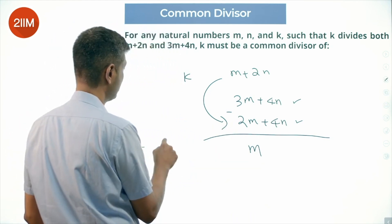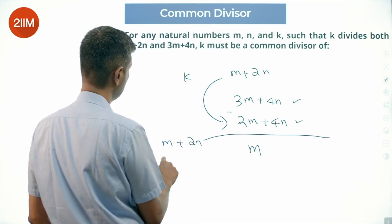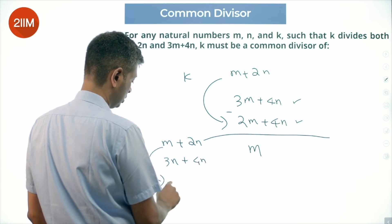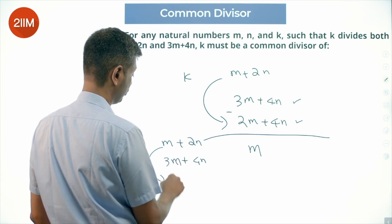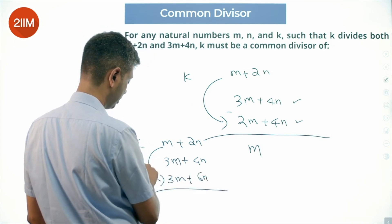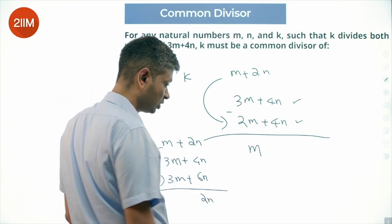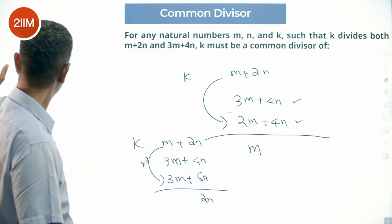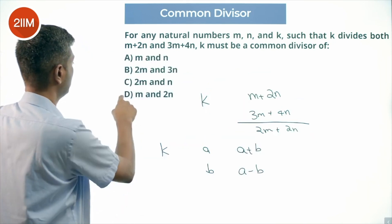What do we do next? K divides M plus 2N and 3M plus 4N. So K will divide 3M plus 6N, multiplying this by 3. Subtract one from the other, K will divide 2N. K is a factor of M, K is a factor of 2N. We will look at the choices. If it says M and 2N both are present, yeah, it divides M, it divides 2N.